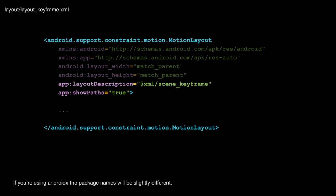So that kind of looks a bit like this. This is your layout.xml file, and as you can see here highlighted, we've got the relationship to the scene file. We've also included one of the debug tags where you can say showPaths equals true, and this will show you the line that a widget will take as part of your animation. You'll see that in my animations later on.